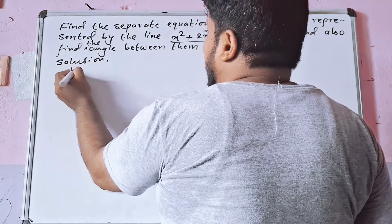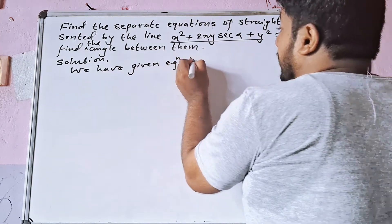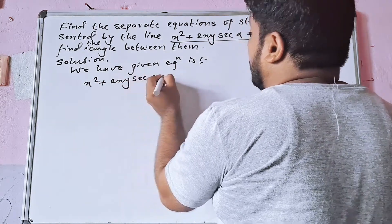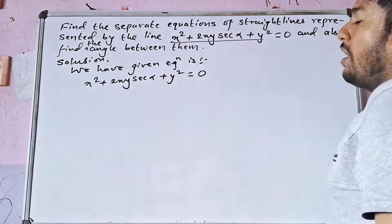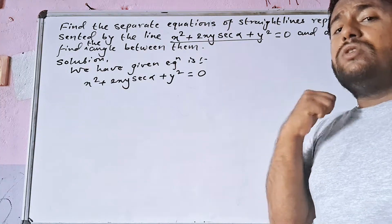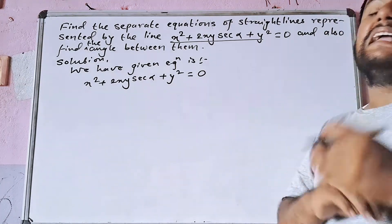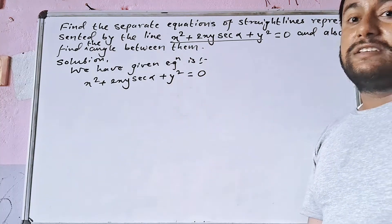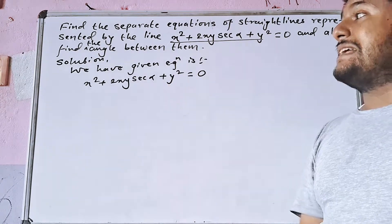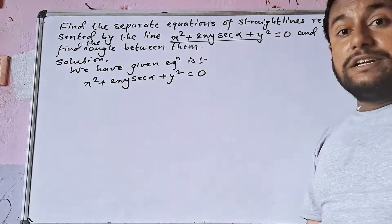The solution: we have given the equation x squared plus 2xy·secα plus y squared equal to 0. If you have a single equation and need separate pair equations, you factorize it. In this situation, you treat it like a quadratic equation and apply the quadratic formula to factorize it.